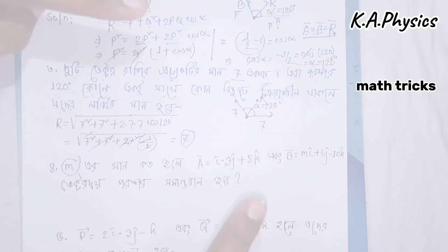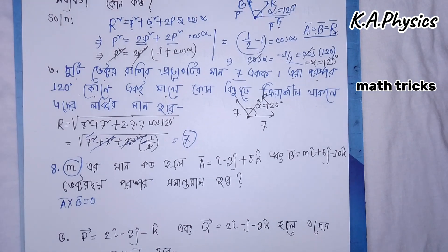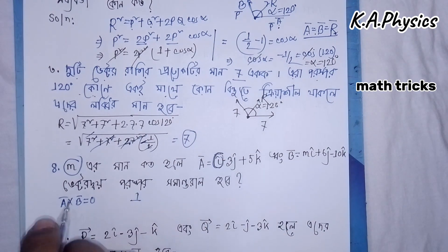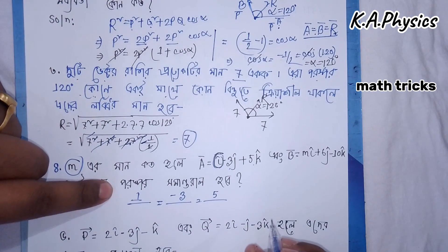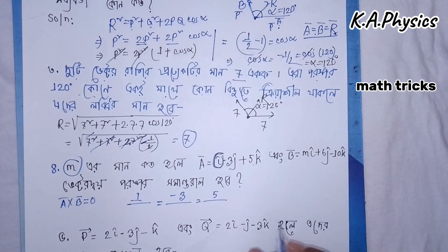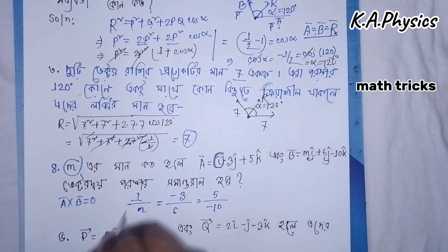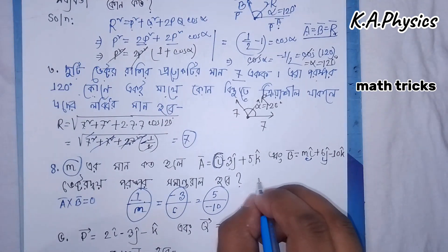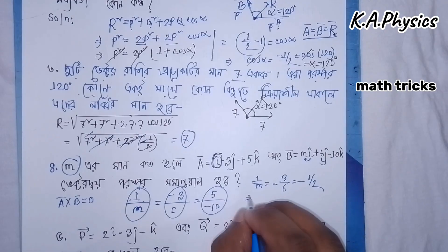A vector dot B vector equal to zero. Also, A vector cross B vector equal to zero. For example, if A vector has components with I equal to some value, J equal to 6, K equal to minus 10, then the result equals eta by eta, giving minus 3 equals to minus half.